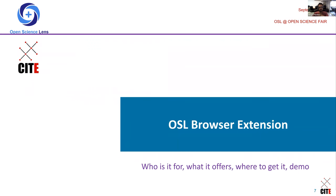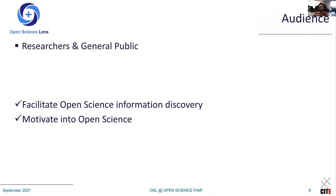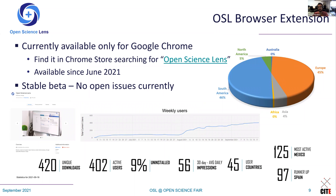Going into the browser extension, the audience we're targeting is researchers and the general public. The aim is to facilitate open science information discovery and motivate end users into open science. The extension is currently available only for Google Chrome and you can find it in the Chrome Store by searching for 'Open Science Lens.' It has been available since June 2021 and we currently have no open issues, so we're in a stable beta situation.